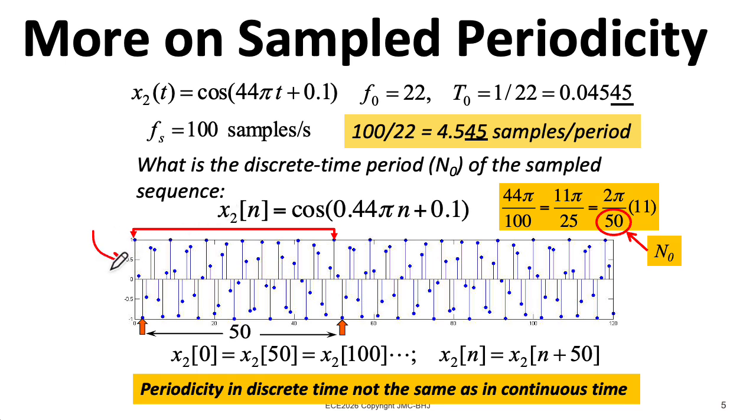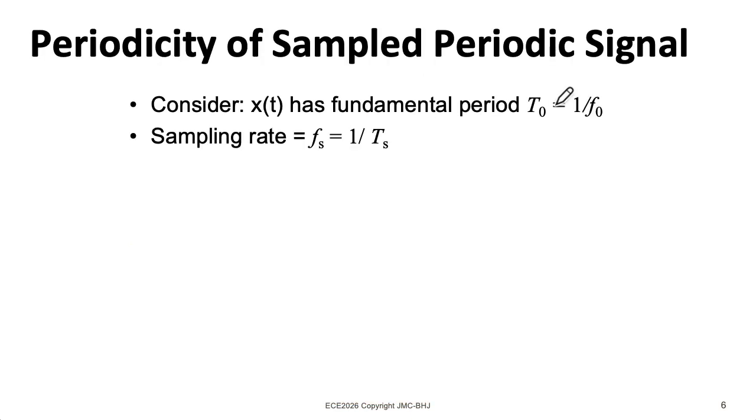Again, if we apply our ideal band limited reconstruction formula to the signal, you will get a 22 hertz sinusoid out with this period. Let's generalize this concept.